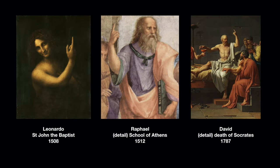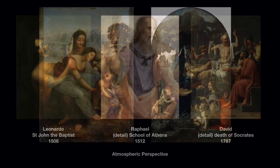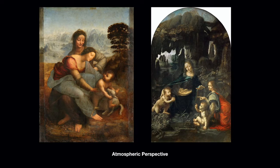Leonardo da Vinci gave us atmospheric perspective. By observing things, he noticed that something far away was obscured by a haze or smokiness, and he called this sfumato — Italian for 'smoky.' He probably didn't know it was caused by an abundance of water molecules in the air, but by adding this smokiness to images he created a better rendition of reality. This also reflects the scientific method: just look at something and be true to what you see.